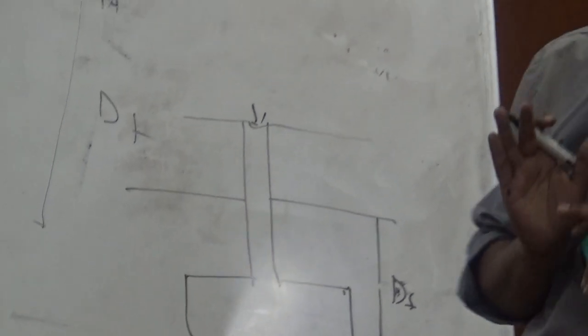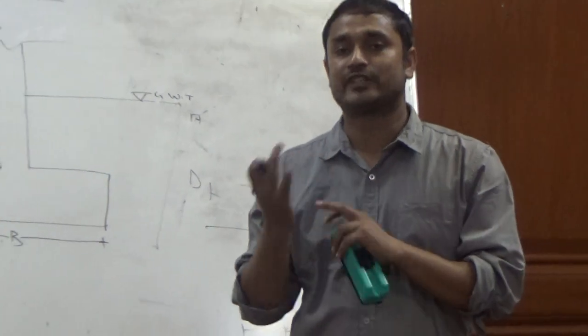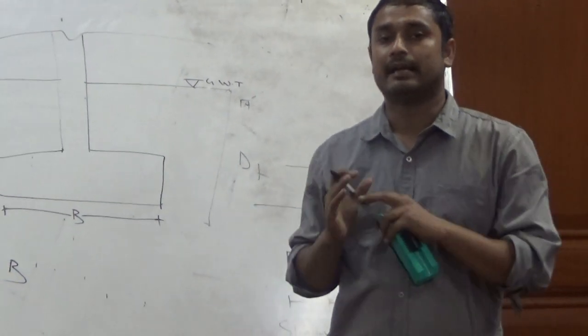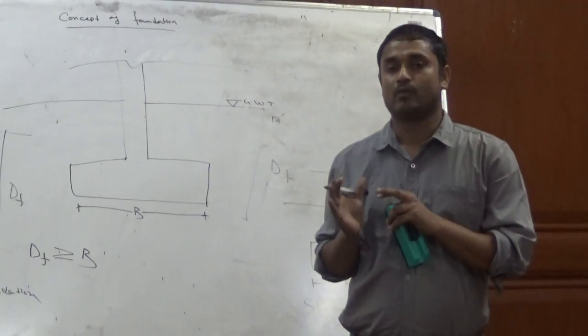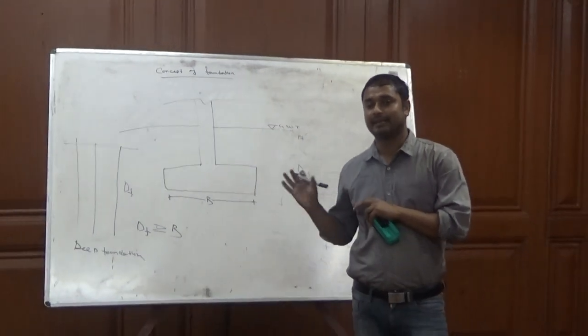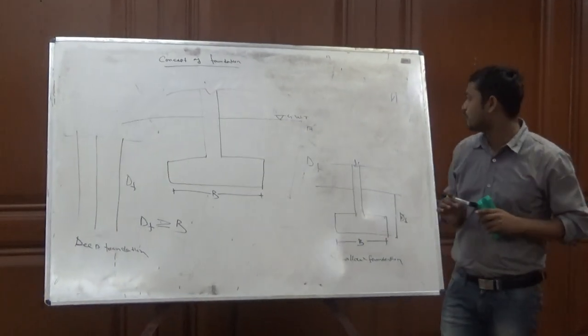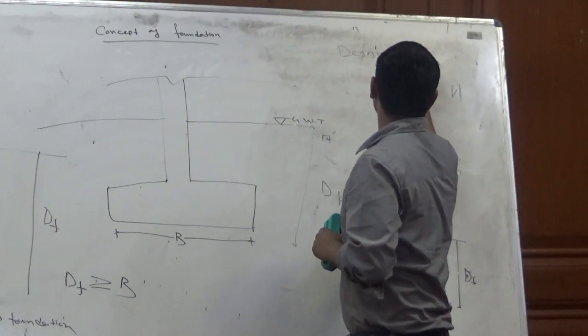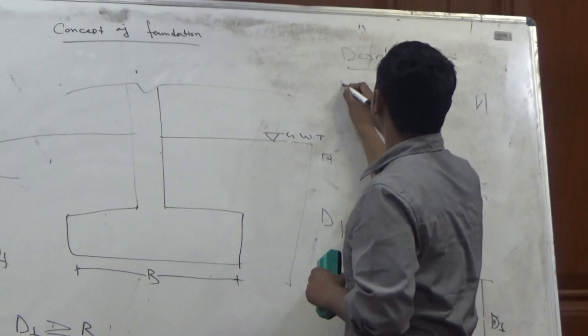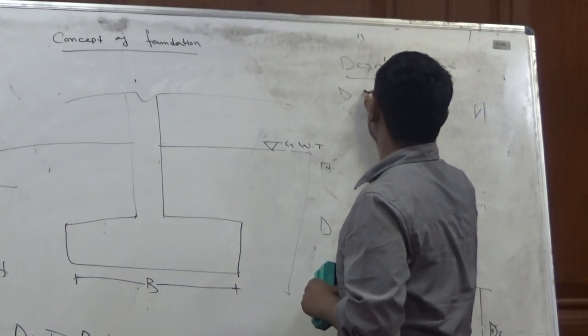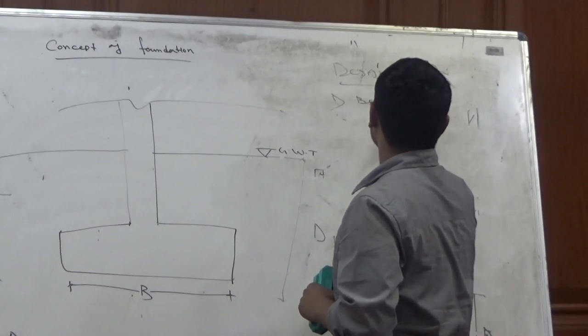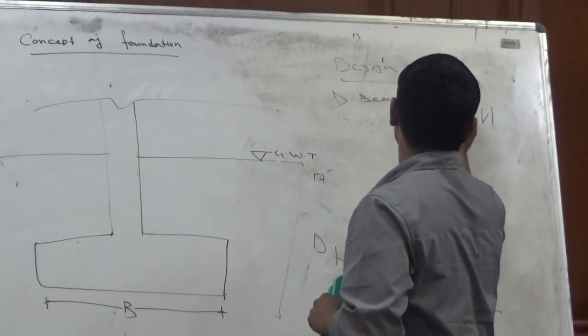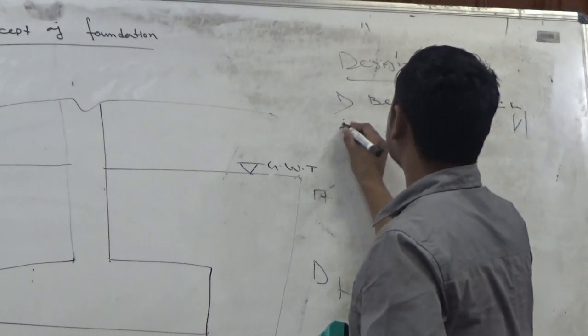So we know two important design criteria. First we have to save against shear failure and second thing is we can't undergo excessive settlement. That is the two important design criteria. First one is bearing capacity and second one is settlement.